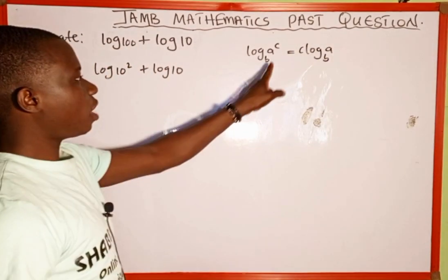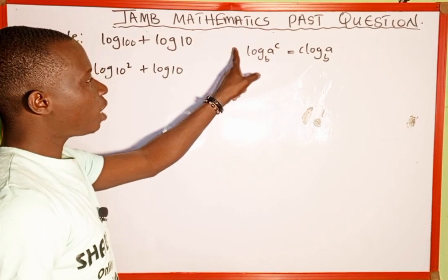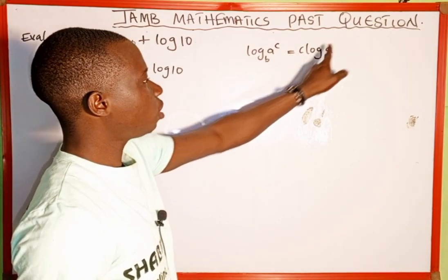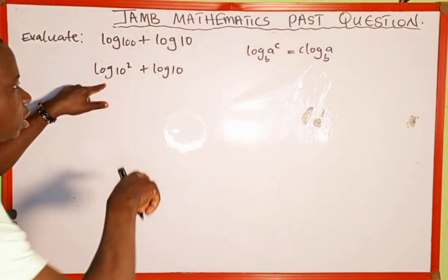What you notice is that when you have a log of a number raised to the power of something to the base of b, this c is going to come back to multiply the log. We have c log a to base b, so I am going to apply this property to the left hand side of this expression.